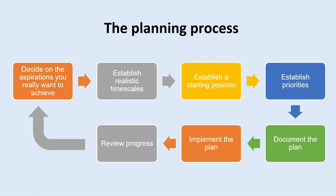The planning process has seven stages. The first is to decide on the aspirations you really want to achieve. Based on this, we can establish realistic timescales, and then establish where we are right now — our starting position. Once we know our starting position, we can establish our priorities: what is the first, second, third thing we want to achieve. Then we put the plan into a document — we write it down, put the plan to paper. Once we've done that, we start implementing. And once implemented, we review the progress — is there any remedial action that needs to be put in place? Then the loop starts again.